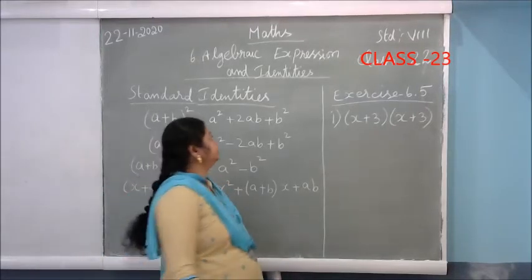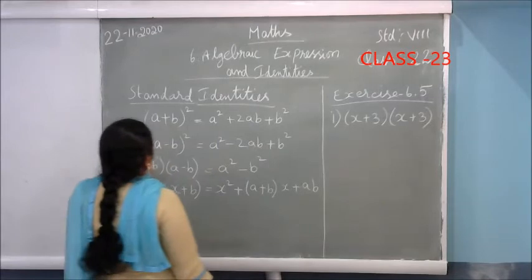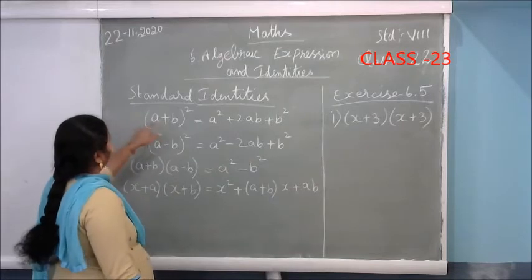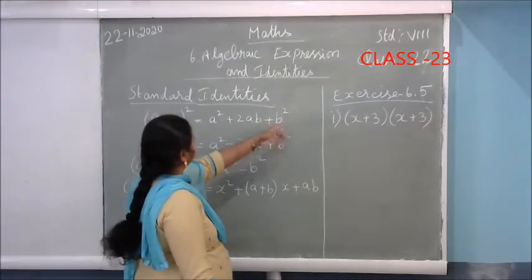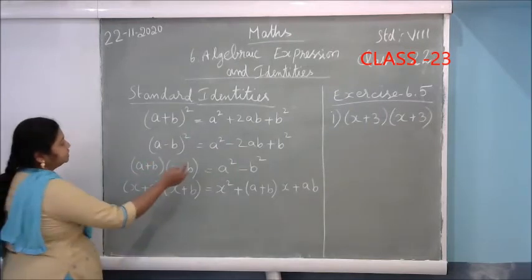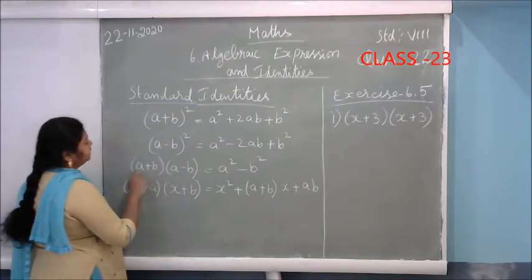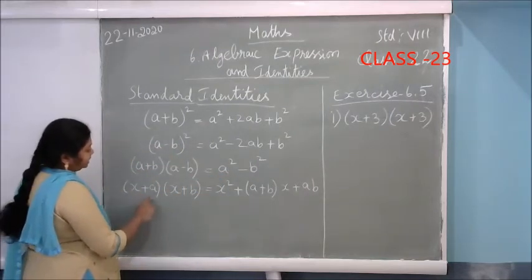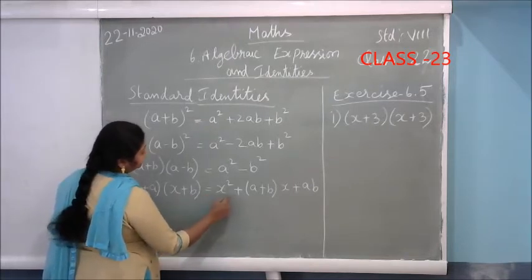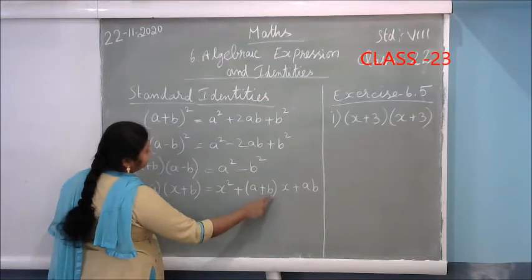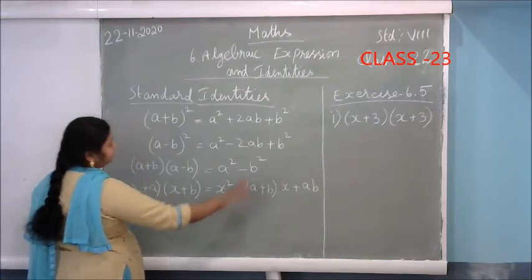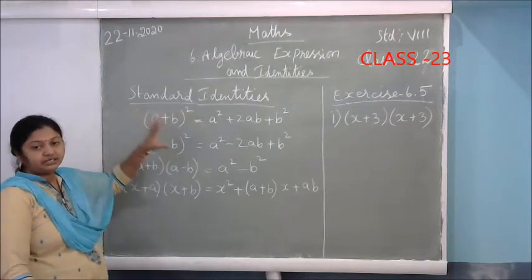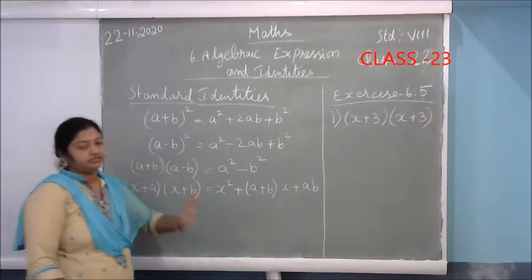Good morning students. Today in class 22 we will see exercise 6.5. Before starting, you should learn all these 4 formulas: (A+B)² = A²+2AB+B²; (A-B)² = A²-2AB+B²; (A+B)(A-B) = A²-B²; and (X+A)(X+B) = X²+(A+B)X+AB. These 4 formulas are very important — they are the standard identities. Using these identities only we are going to simplify the given sums.